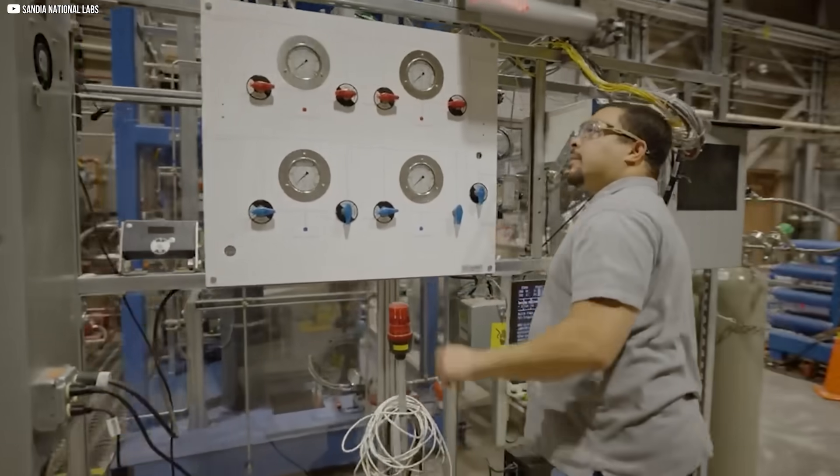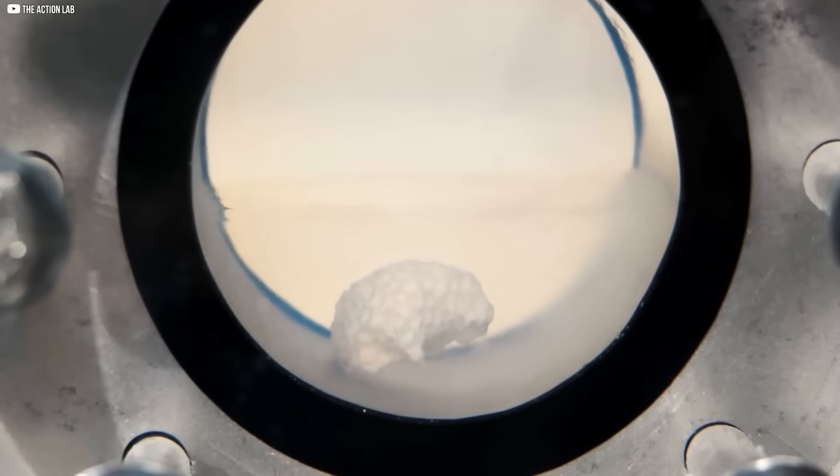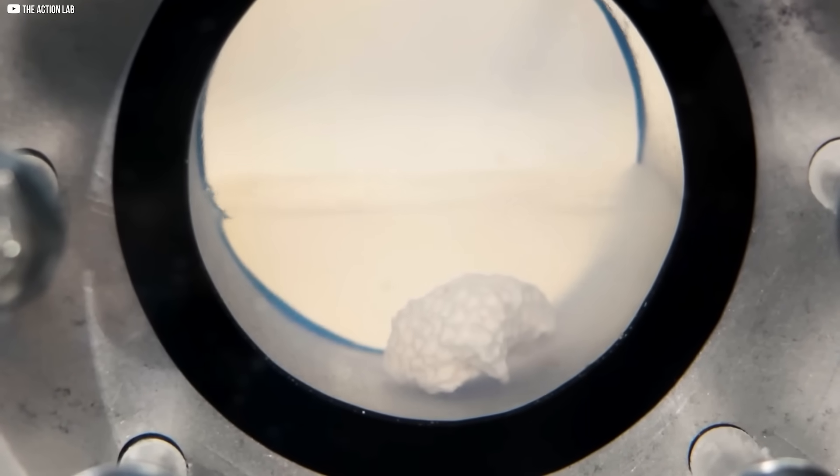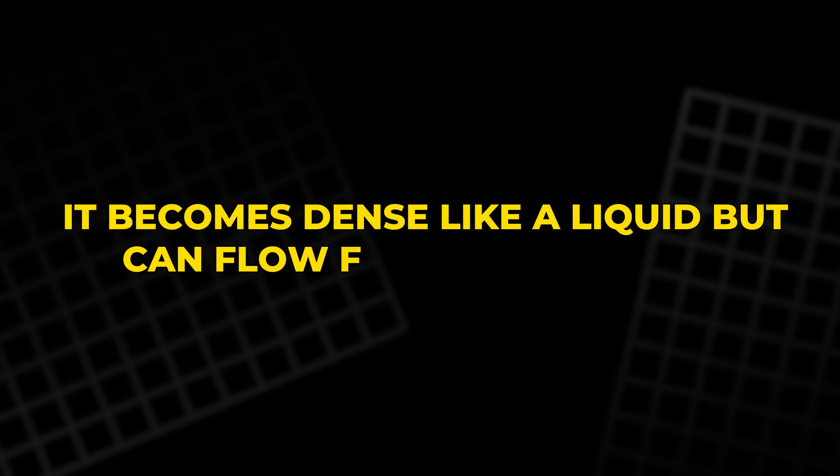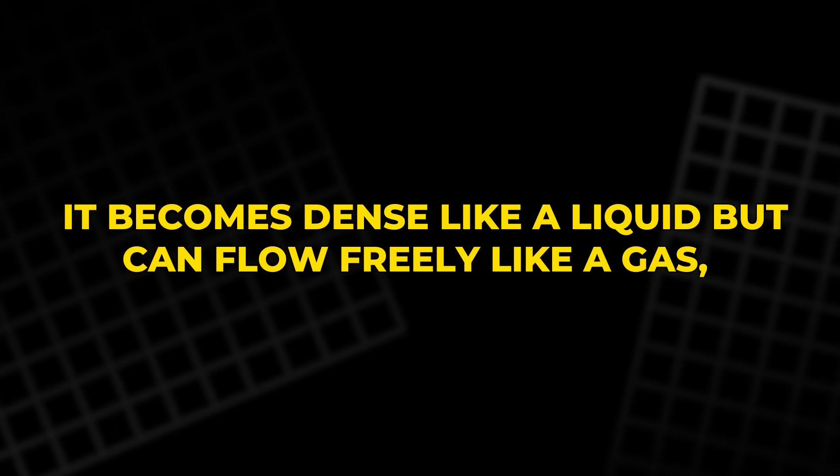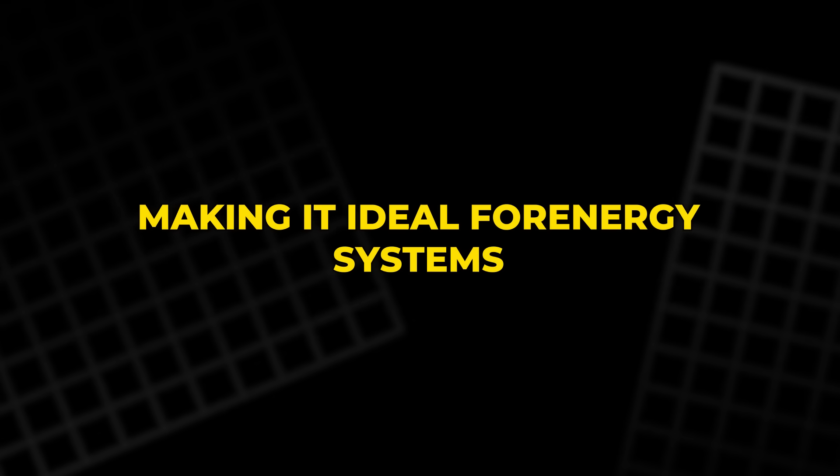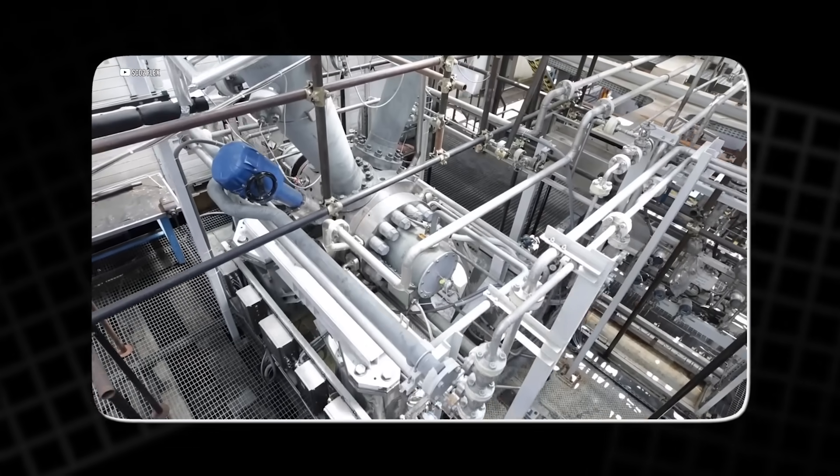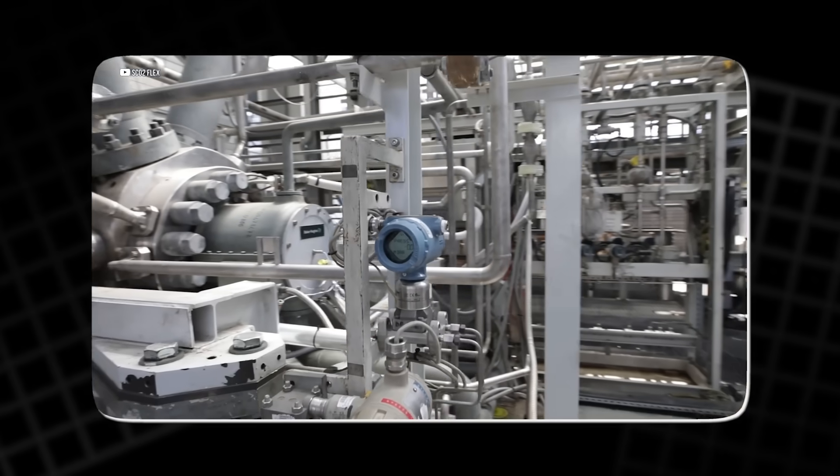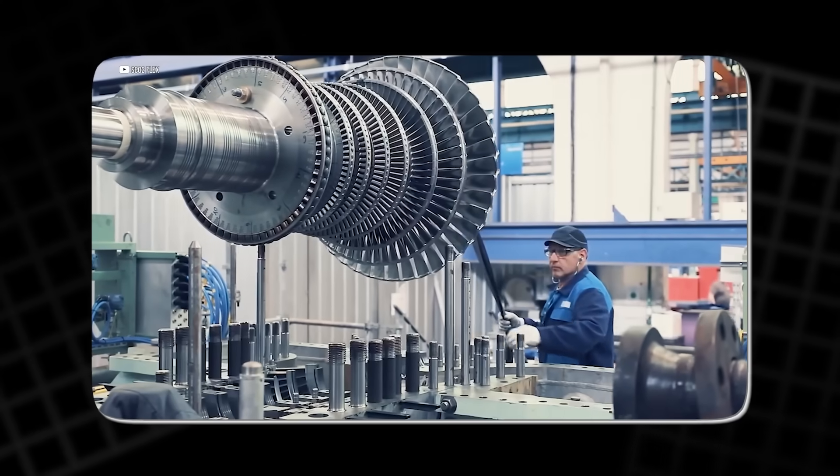When CO2 is heated beyond 31 degrees Celsius, 88 degrees Fahrenheit, and placed under high pressure, about 74 atmospheres, it enters a state where its properties combine those of gases and liquids. It becomes dense like a liquid but can flow freely like a gas, making it ideal for energy systems. This unusual state of matter allows supercritical CO2 to efficiently transfer energy, which is key in powering turbines.